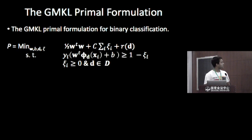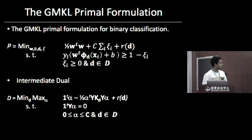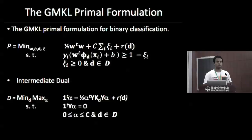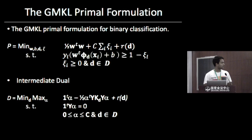In the primal, if we fix the kernel weights D, it is exactly similar to a standard SVM primal. From the primal, we go to the intermediate dual, which is a saddle point problem. To get the intermediate dual, we keep the kernel weights fixed and introduce dual variables with respect to the remaining primal variables W, B, and Xi. Again in the intermediate dual, if we fix the kernel weights, it is the same as a standard SVM QP.